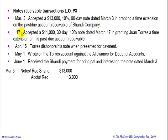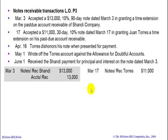On March 17th, we accepted an $11,000, 30-day, 10% note dated March 17th, granting Juan Torres a time extension on his past-due accounts receivable. It looks like we're getting a lot of past-due accounts receivables taken care of by putting them on notes so we can draw interest. On the 17th, we'll debit notes receivable — Torres — $11,000 and credit accounts receivable for $11,000.